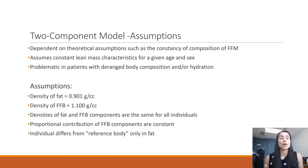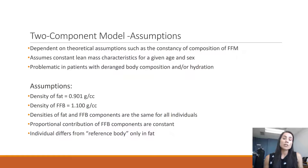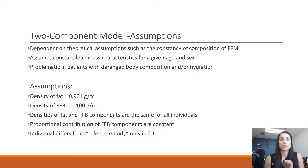This is similarly an issue with people who have different hydration statuses. The two-component model is not ideal — it was what was first used, and most of what we use nowadays is a three-component model. In terms of specific assumptions, this model assumes the density of fat for every individual is 0.901 grams per cubic centimeter, and the density of fat-free body is 1.1 grams per cubic centimeter. We know that's obviously not the case for everyone.